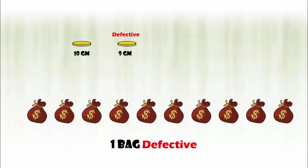You have 10 bags of gold coins. Each gold coin weighs 10 grams, except for one bag which has all defective coins that weigh 9 grams each. However, all the coins, normal and defective, look and feel exactly the same.